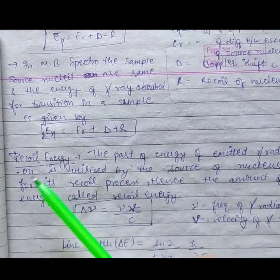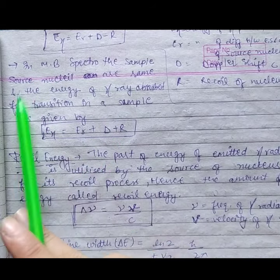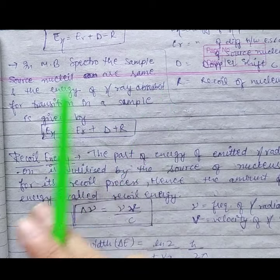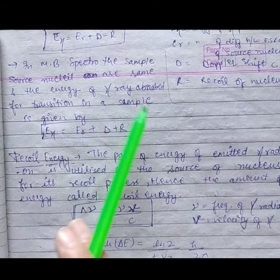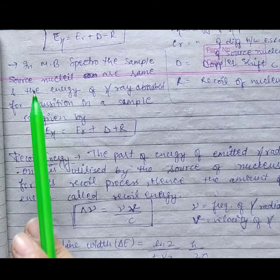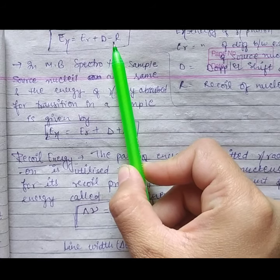In Mössbauer spectroscopy, the sample source nuclei are same and energy of gamma ray absorbed for transition in same sample is given by, where D minus R will come, this formula will apply.